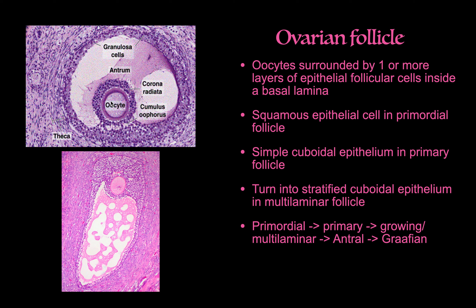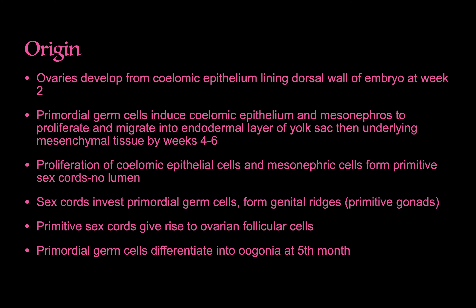Here you can see a coronal section looking down into a follicle, and this is a sagittal section. In terms of embryological origins, the ovary comes from the epithelium of the dorsal wall. Primordial germ cells induce the epithelium and mesonephros to proliferate; these migrate into the yolk sac, proliferate, and form primitive sex cords — solid, with no lumen. The sex cords invest the primordial germ cells and form the genital ridges, your primary gonads, which give rise to the ovarian follicular cells.